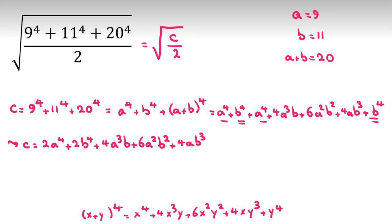Now, here, I have C over 2. C over 2 is what? It is A to the 4 plus B to the 4 plus 2A cubed B plus 3A squared B squared plus 2AB cubed.